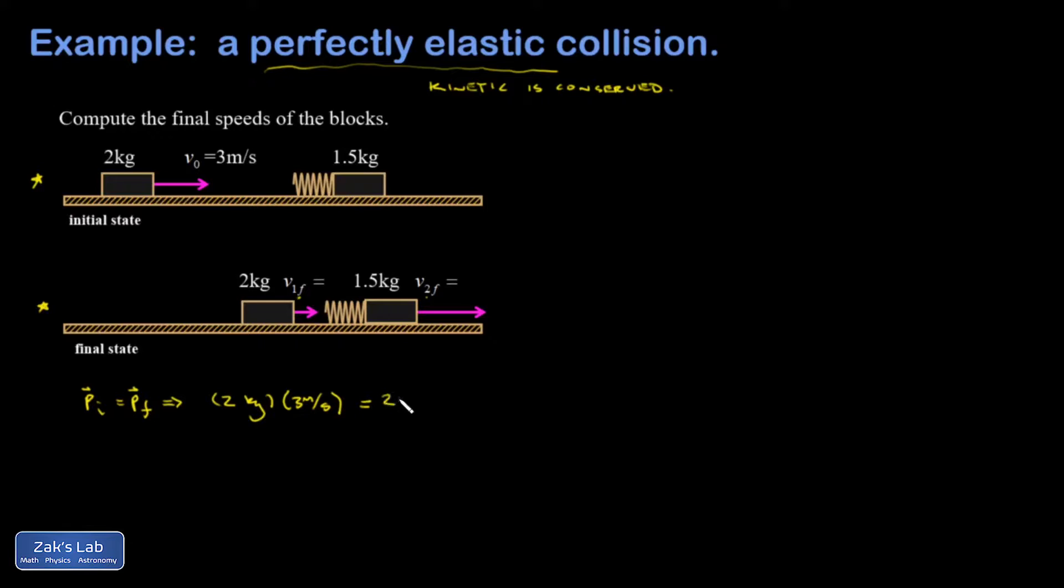My final is two kilograms moving at an unknown final velocity v1 final, plus an additional one and a half kilograms moving at an unknown final velocity v2 final. We're going to have to do a lot of algebra, so I'm going to clean this up and just disappear the units.